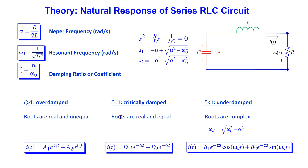If Zeta is equal to 1, then we have a critically damped response. In this case the roots are real and equal, and the expression for the current has this general form. If Zeta is less than 1, then we have an underdamped response. In this case the roots will be complex. For the underdamped case we define a damping frequency omega D, and the expression for the current has this general form.